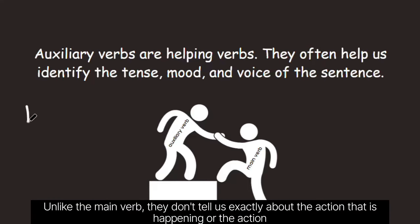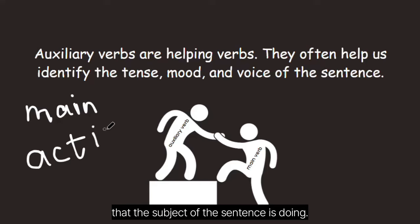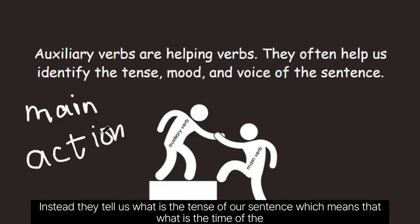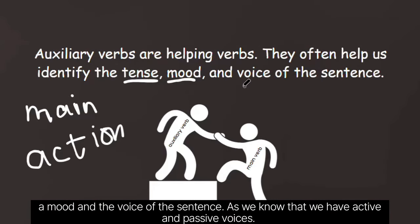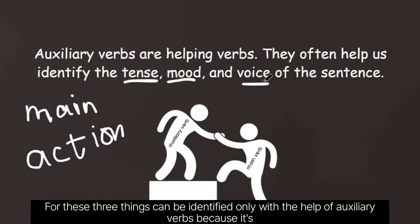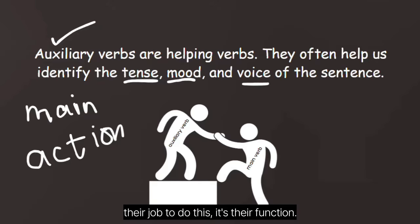Unlike the main verb, they don't tell us exactly about the action that is happening or the action that the subject of the sentence is doing. Instead, they tell us what is the tense of our sentence — which means what is the time of the action — what is the mood of the sentence. I'll describe a bit later what it means by mood and the voice of the sentence. As we know, we have active and passive voice. These three things can be identified only with the help of auxiliary verbs because it's their function.